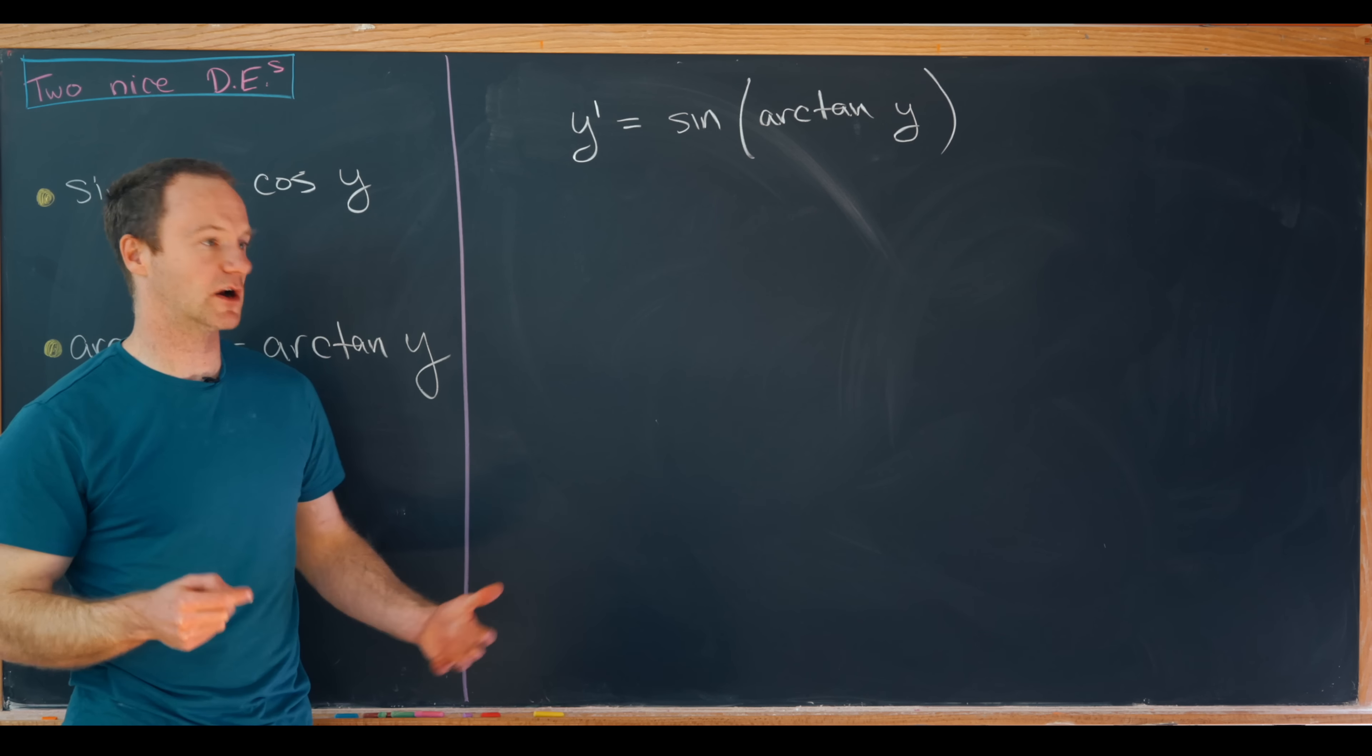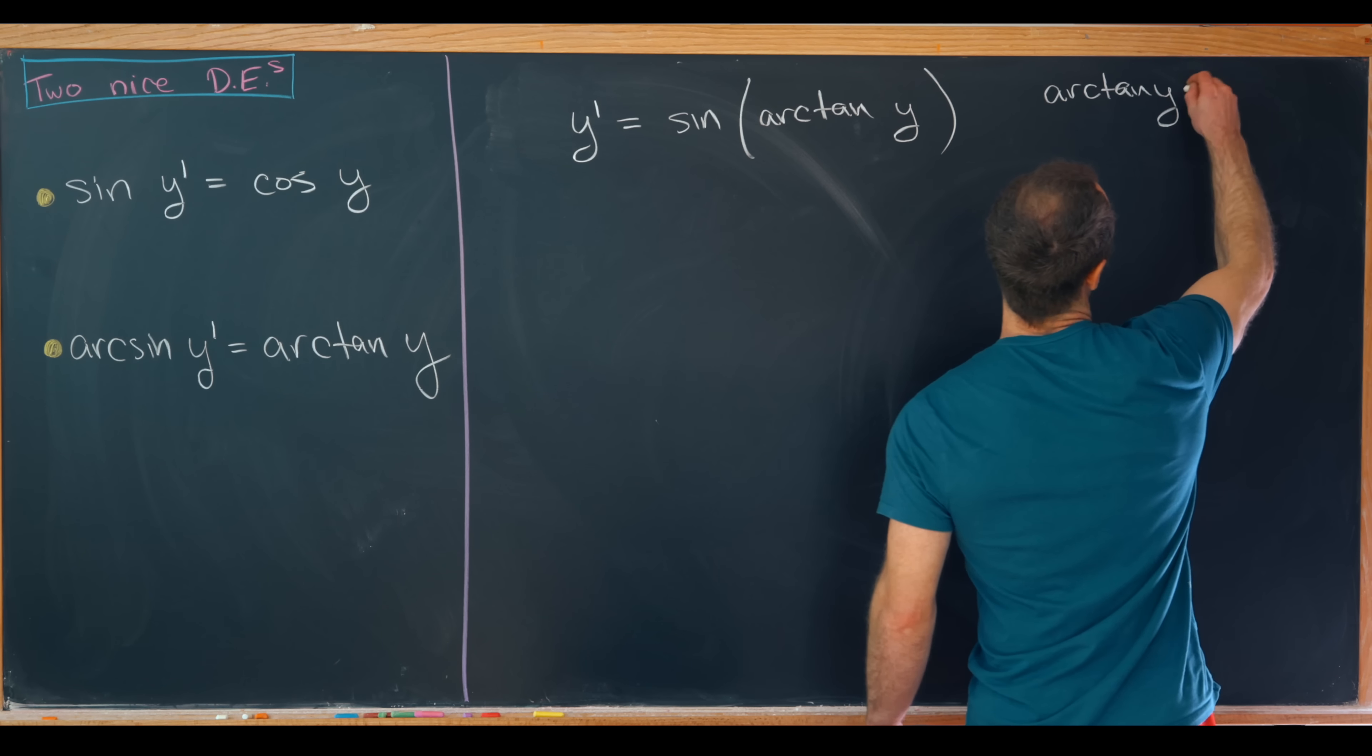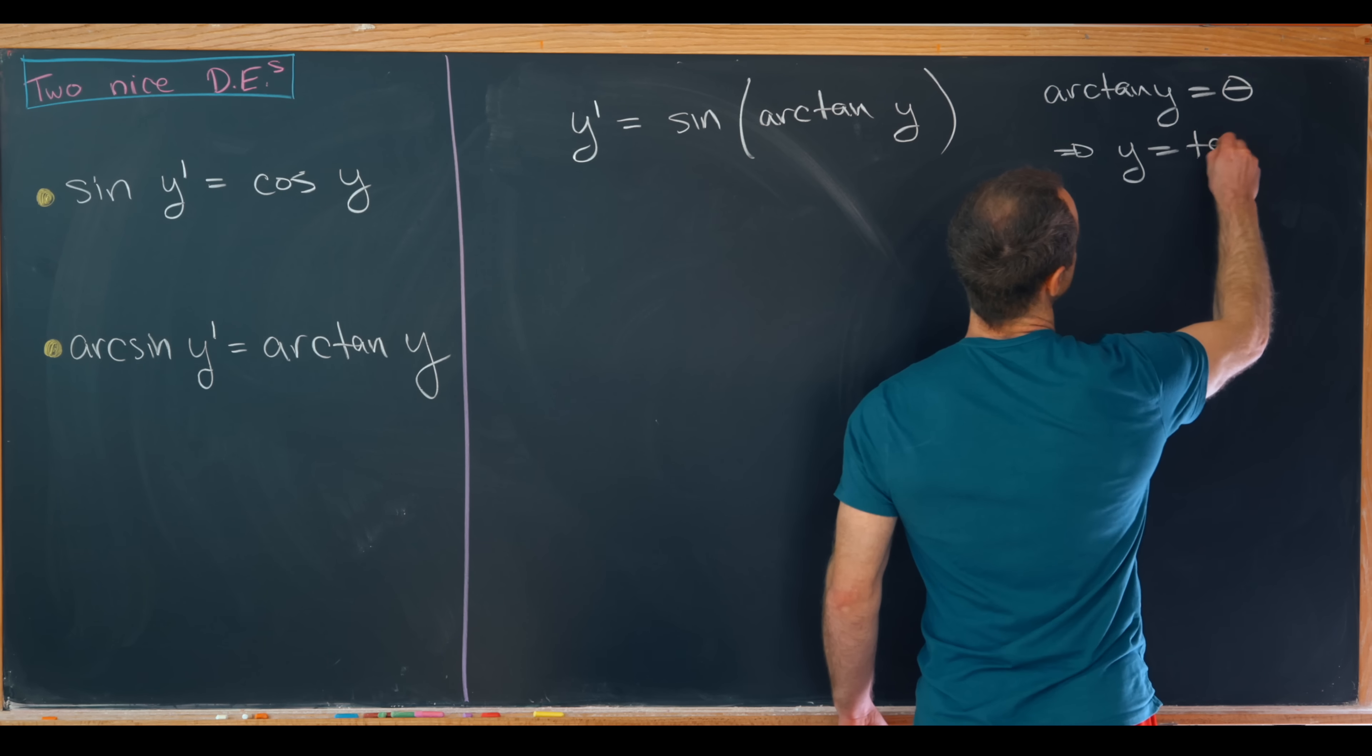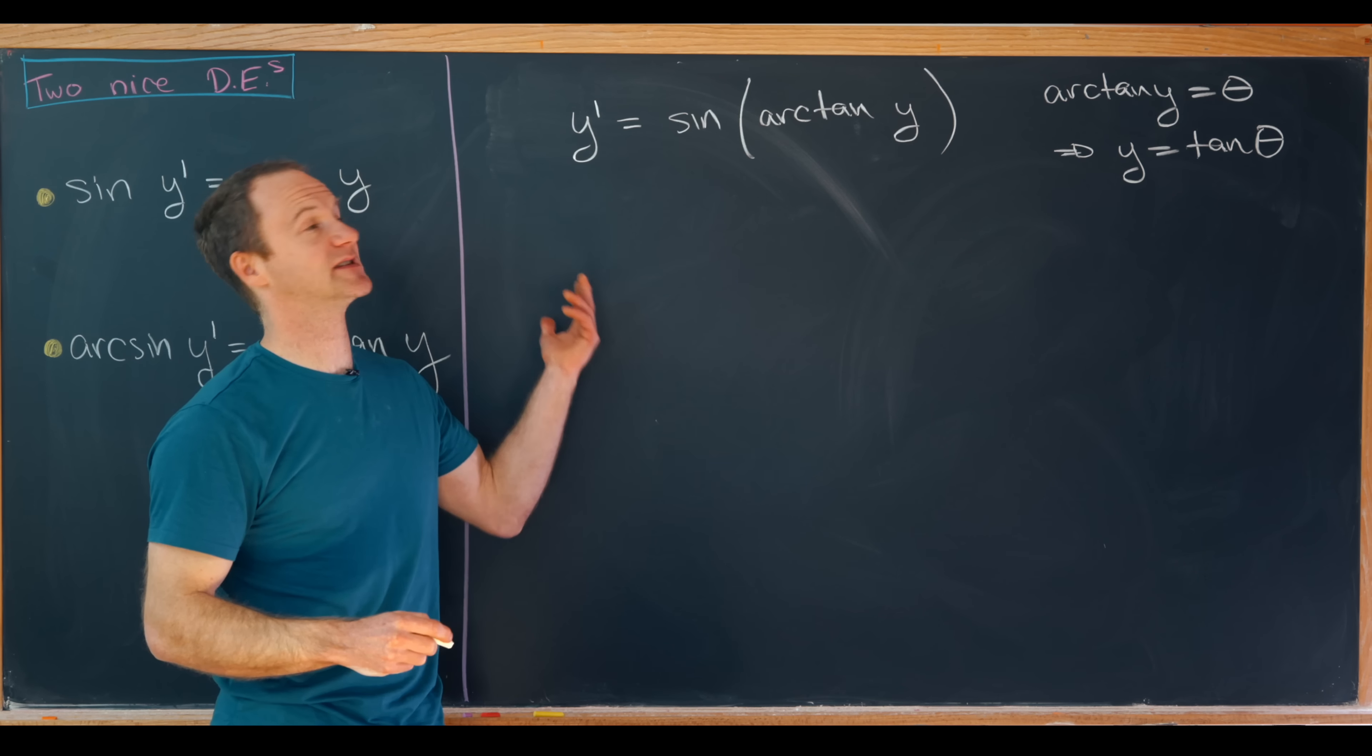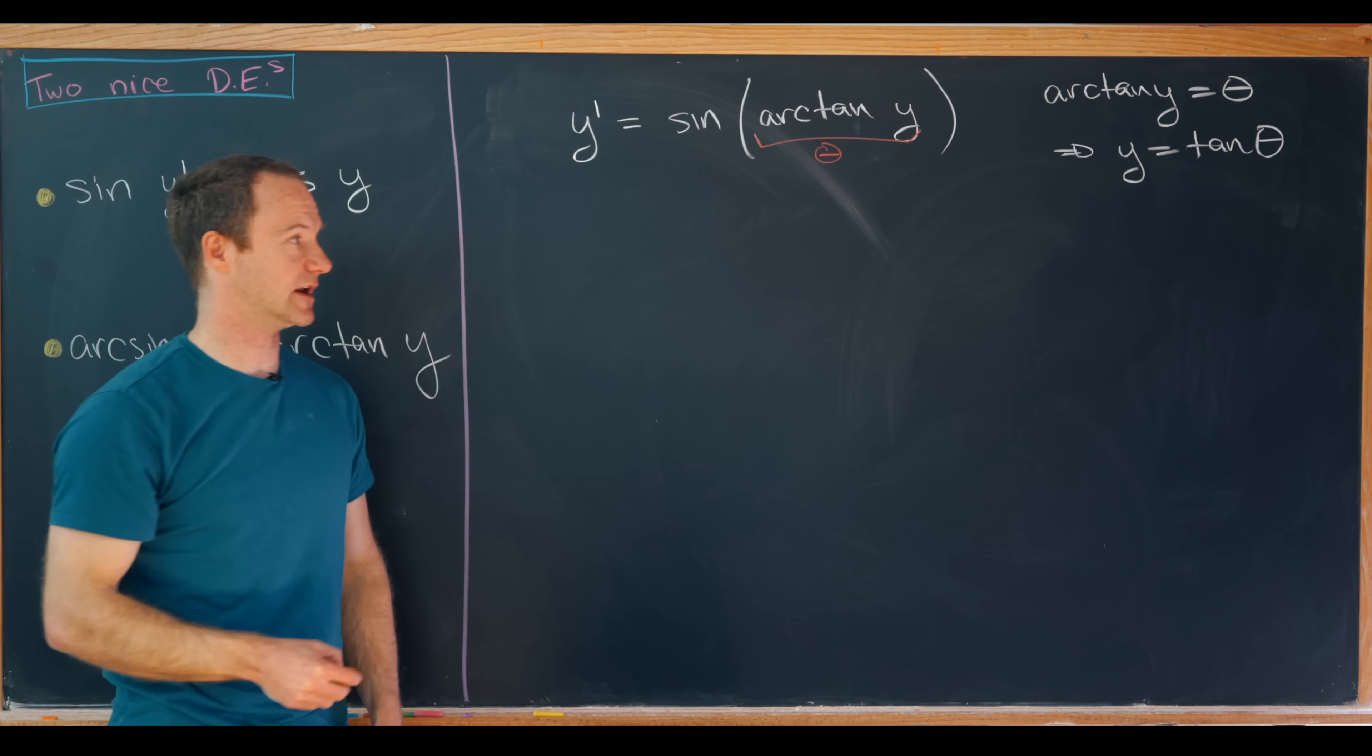That's not too hard if you know the trick. What I'll do is take the arc tan of y and set it equal to an angle theta. But that means that y is equal to the tangent of theta. And so now using the fact that y is the tangent of theta, we need to find the sine of theta. And that's because under this substitution what we have here is the sine of theta.